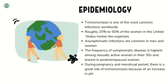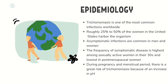Trichomoniasis is one of the most common infections worldwide. Roughly 25 to 50 percent of women in the United States harbor the organism. Asymptomatic infections are common in both men and women. The frequency of symptomatic disease is highest among sexually active women in their thirties and lowest in the postmenopausal period. During pregnancy and the menstrual period there is a greater risk of trichomoniasis because of an increase in pH.